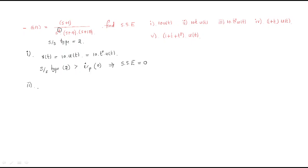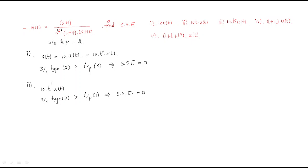For the second input, 10·t·u(t), the system type is 2, which is greater than the order of input (1). Therefore, the steady-state error is also 0.